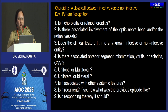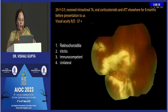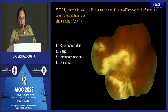The questions to ask about every patient of chorioretinitis: Is it chorioretinitis or retinochorioretinitis? Is there associated involvement of the optic nerve head? Do the clinical features fit into any known infection or non-infection? Is there associated inflammation — uni or multifocal, unilateral or bilateral? Is there systemic disease? What was the previous episode like? Is the patient responding to treatment as expected?